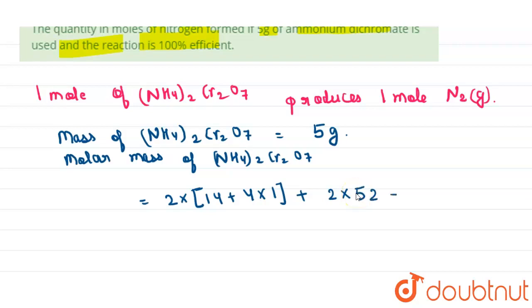52, plus 7 times the molar mass of oxygen, which is 16. So on adding these quantities, we will get 252 grams per mole.